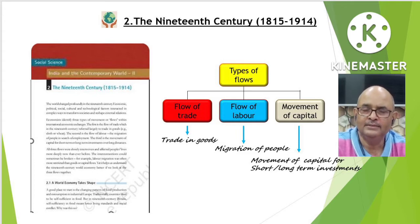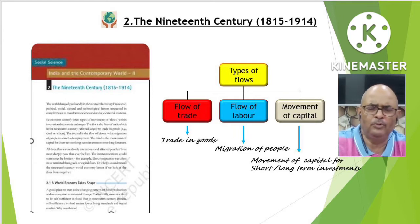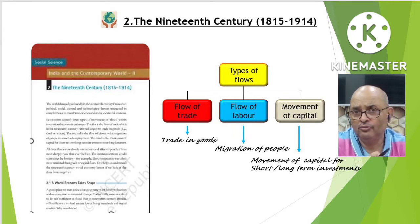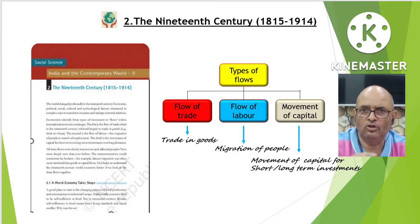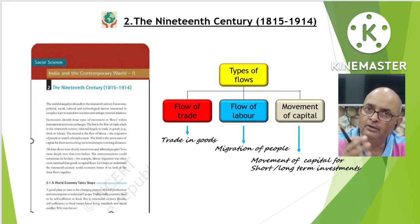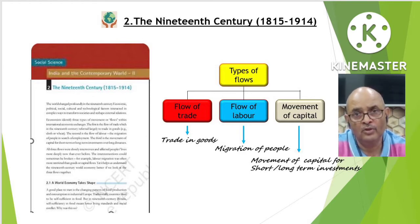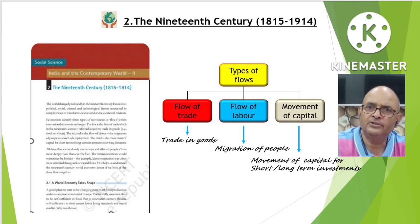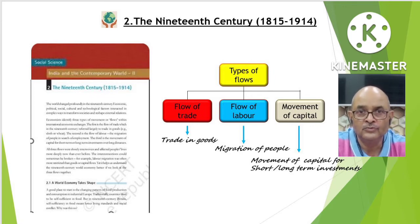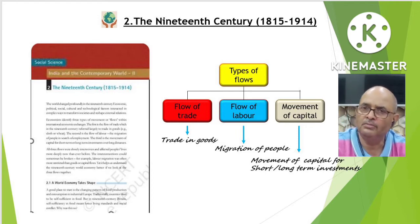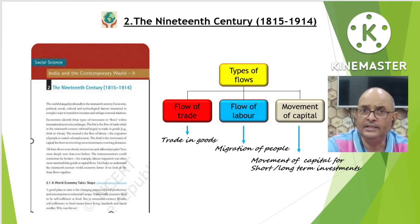Today we will take up Unit 2, that is the 19th century. This 19th century is very important. Three types of movements or flows took place within international economic exchange: first, flow of trade; second, flow of labor; and third, the movement of capital. Flow of trade refers to the trade in goods.